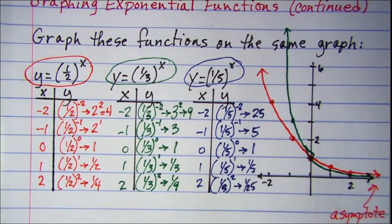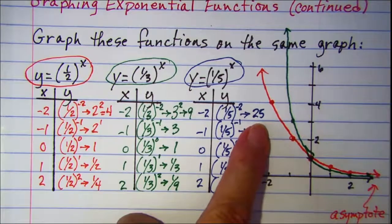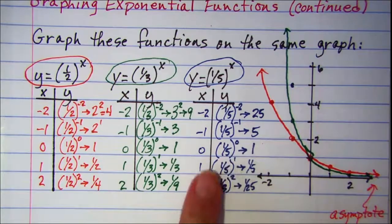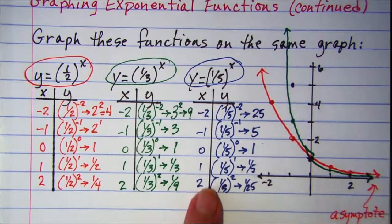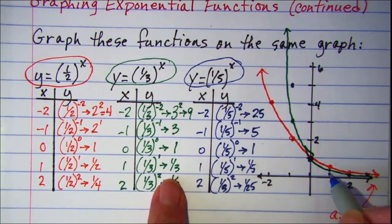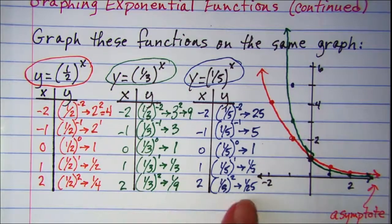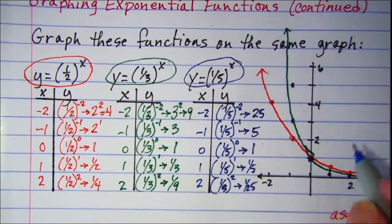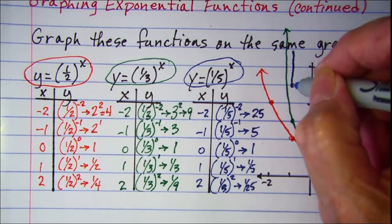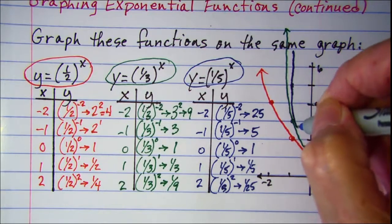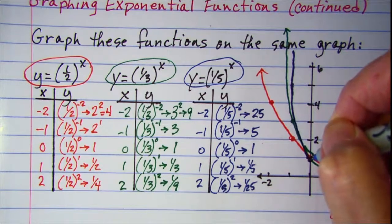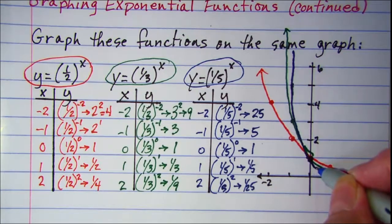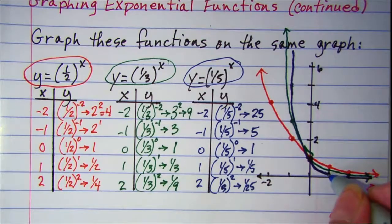This one's going to be off the graph at 25 — way up there. When x is negative 1, we have 5. When x is 0, y is 1. When x is 1, we have one fifth, which is even smaller than one third, so it's squeezed in between there. And when x is 2, y is one twenty-fifth, which is even smaller than one ninth. So our curve is going to be closer to the y-axis on the left side, it's going to cross at x equals 0, y equals 1, and on the right side it's going to be between the other curves and the x-axis.